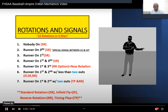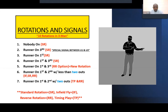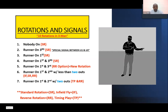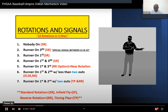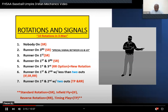Rotations and signals. There are 10 rotations in three-man, with the new addition of runner on first and third being a reverse rotation. All signals can be found in the NFHS umpire's manual. Crews may choose to use different signals — once again, umpires should discuss this during a quality pregame meeting.